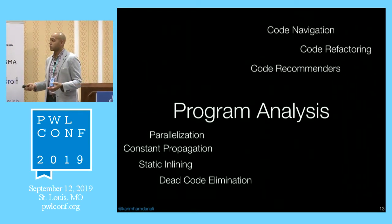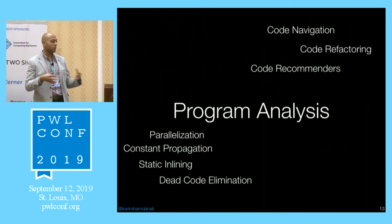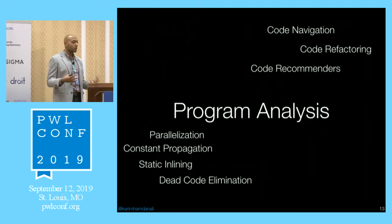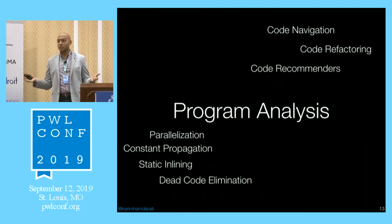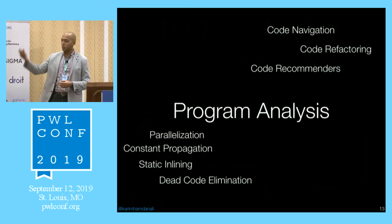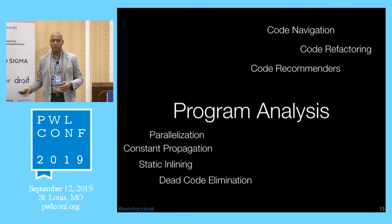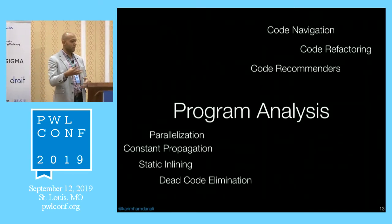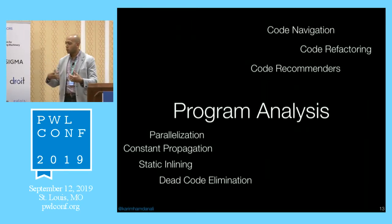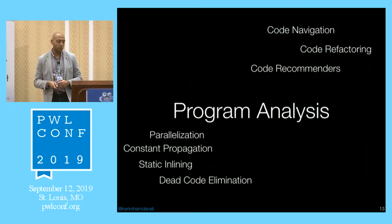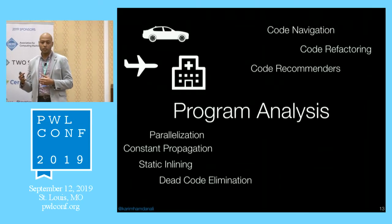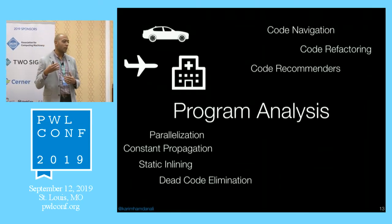It's also used in developer support tools: code navigation to find uses of methods, references, code refactoring tools to rename variables, or code recommender systems. If you've used an IDE like IntelliJ, VS Code, or Eclipse and hit control-space, you get a list of methods you can call on an object. That internally uses program analysis to reason about the context around the code you're writing.